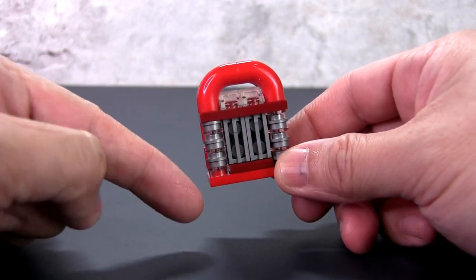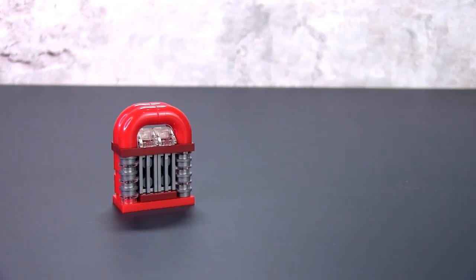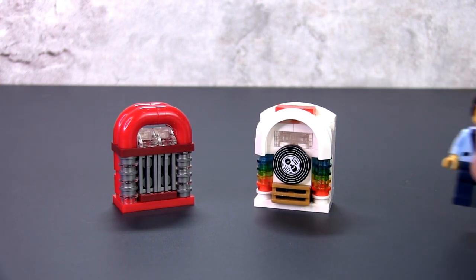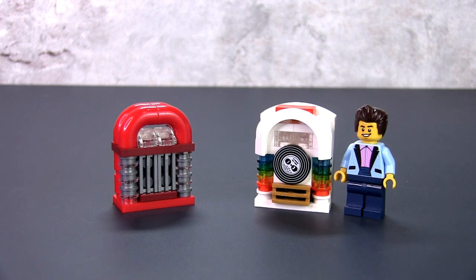However, it could use a bit more detail. I feel that this could be mistaken as a large radiator or heater, especially for younger kids who might not even be familiar with the jukebox. I wanted to redesign a modern jukebox that is of the same scale as the one in the Downtown Diner. And as you can see, while it is a little taller, it is still shorter than a minifig.